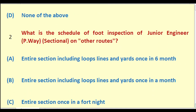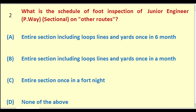What is the schedule of foot inspection of Junior Engineer Permanent Way Sectional on other routes? Options: entire section including loops, lines and yards once in six months; entire section including loops, lines and yards once in a month; entire section once in a fortnight; none of the above. The right answer is: entire section including loops, lines and yards once in six months.